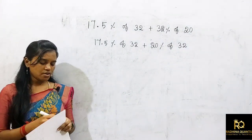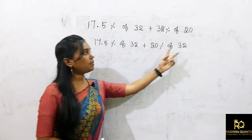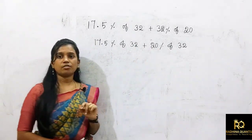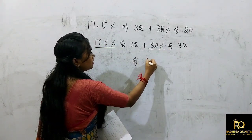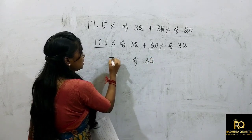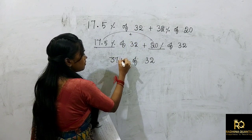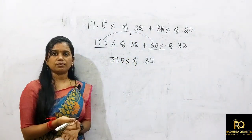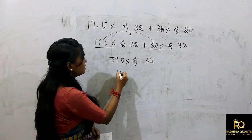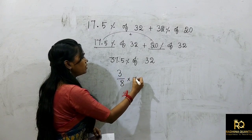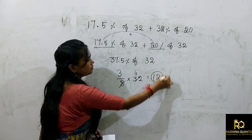So in the first part we calculate 32 × 17.5%, and in the second part we calculate 32 × 20%. If you add these two together, you get 37.5% of 32. What is the equivalent fraction of 37.5%? It is 3/8. So 3/8 of 32: 4 times 3 — 4s are 12.